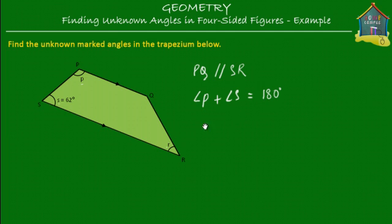So angle P is therefore equal to 180 degrees minus 62 degrees - 62 because angle S is equal to 62 degrees, it's given to us. So then angle P is equal to what? Quite simple. Angle P is equal to 118 degrees. So angle P is equal to 118 degrees. That was simple, wasn't it?